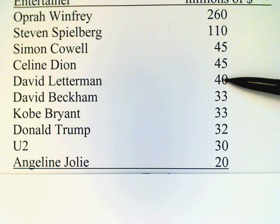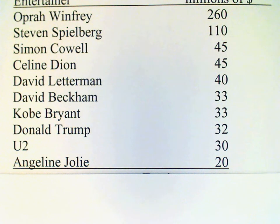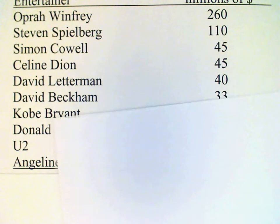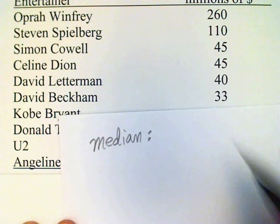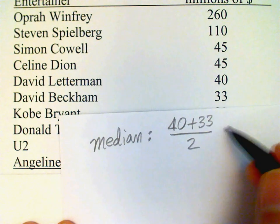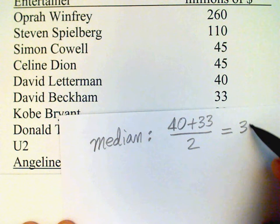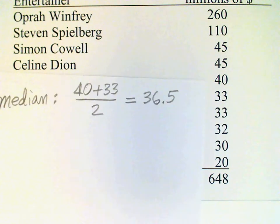Counting five from the top and five from the bottom, we have these two values in the middle: 40 and 33. To get the median value, we just take the average of those two values — 40 plus 33 divided by 2 — and we get 36.5. And 36.5 gives a better summary of this data set than the mean value, which was skewed by those large values at the top.